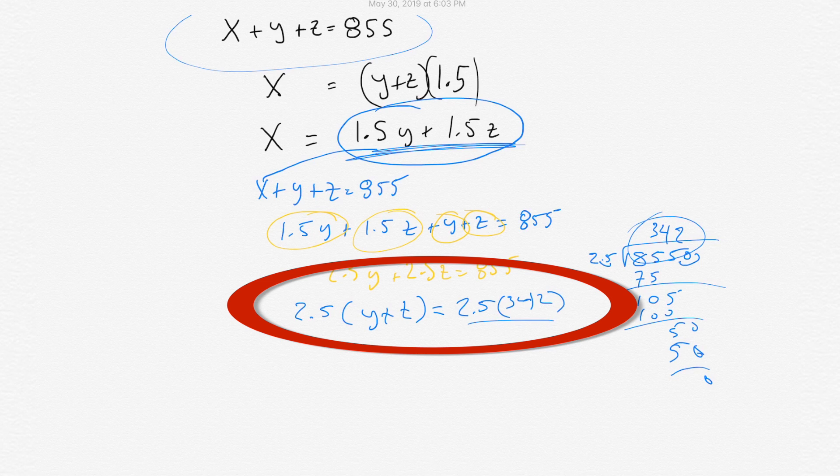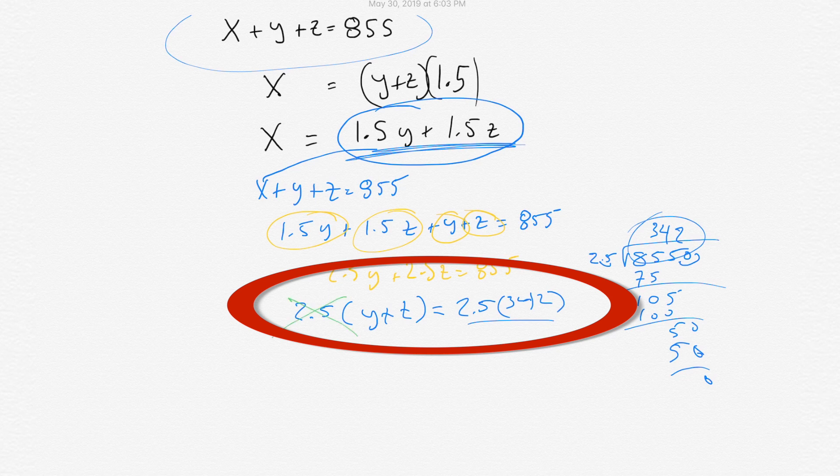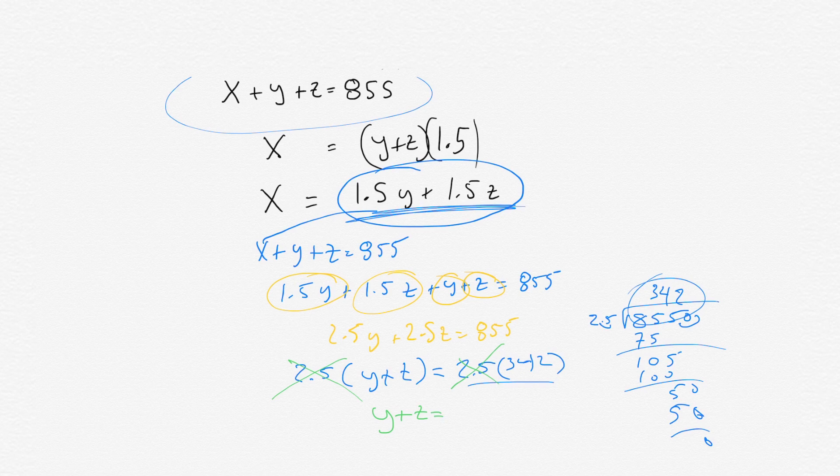342. Sorry. So 2.5 times Y plus Z equals 2.5 times 342. And then obviously at that point, you could just divide each side by the 2.5. So you get Y plus Z equals 342.